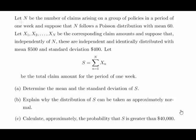So you're not told anything about compound Poisson distribution here, but you are given enough details. Let N be the number of claims arising from a group of policies in a period of one week and suppose that N follows a Poisson distribution of mean 60. Poisson distribution mean 60, just as a remark, that means the variance is 60 also.